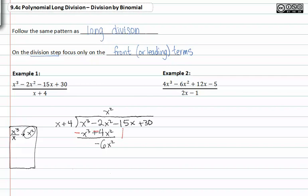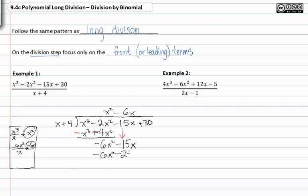At this point, I can drop down the next term in my dividend. I take the first term in my dividend divided by the first term in my divisor to get what I put in my quotient. I put that in my quotient and then I multiply it to each term in my divisor. Again, these will add to zero.